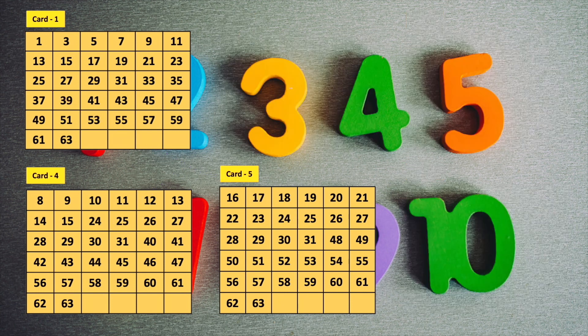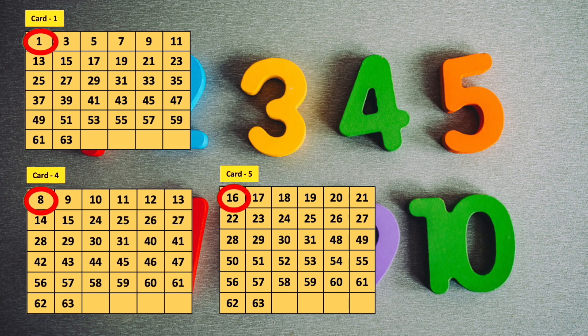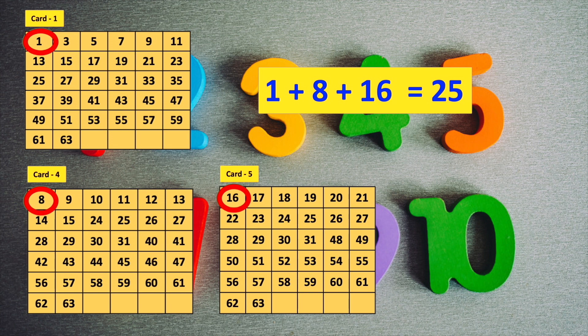Then take those cards only and add the first number from each of them, and that will be the number your friend has thought in his mind.